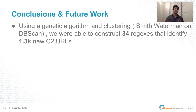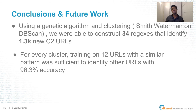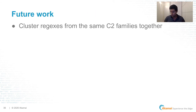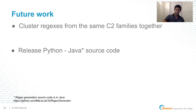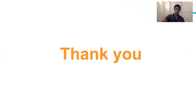Conclusion: using a genetic algorithm and clustering based on Smith-Waterman and DBSCAN, we were able to construct 34 regexes that identified 1,300 new C2 URLs. For every cluster, you need only 12 URL paths to create a powerful signature. Future work involves clustering regexes within the same family. We are also seeking to release the code, which is a mix of Python and Java since the regex extraction part is written in Java and our main code is in Python. The link to the Java code is provided. Thank you very much, I hope you enjoyed — Q&A.